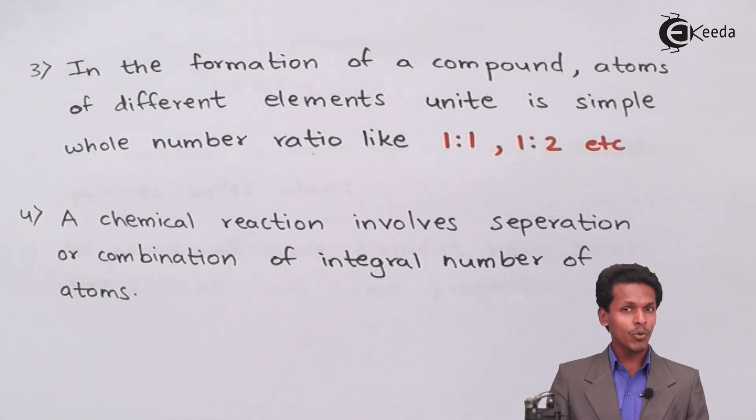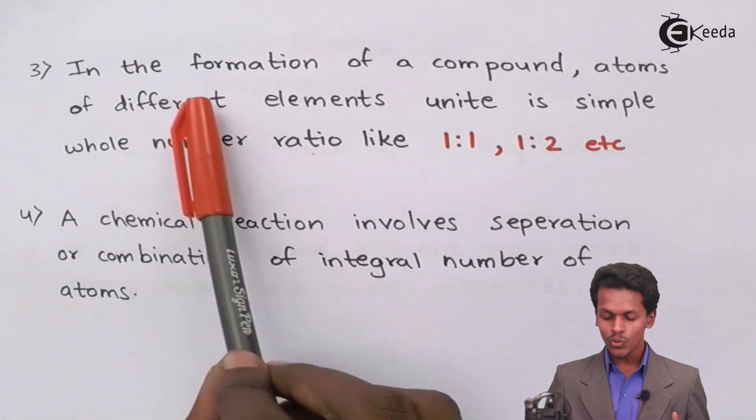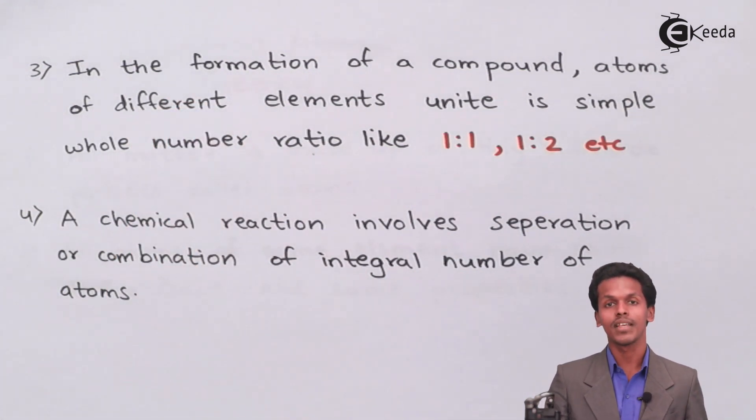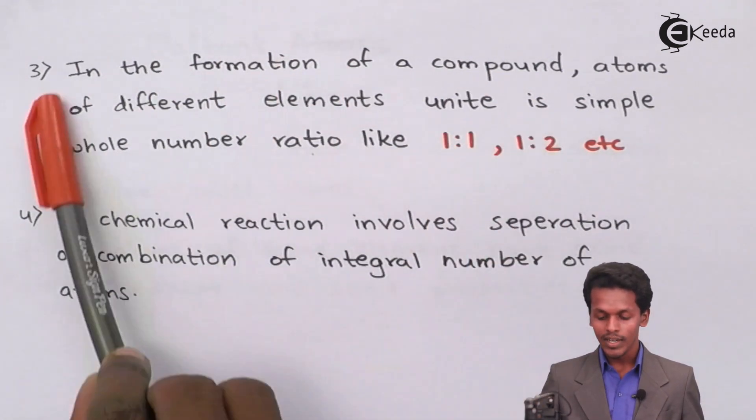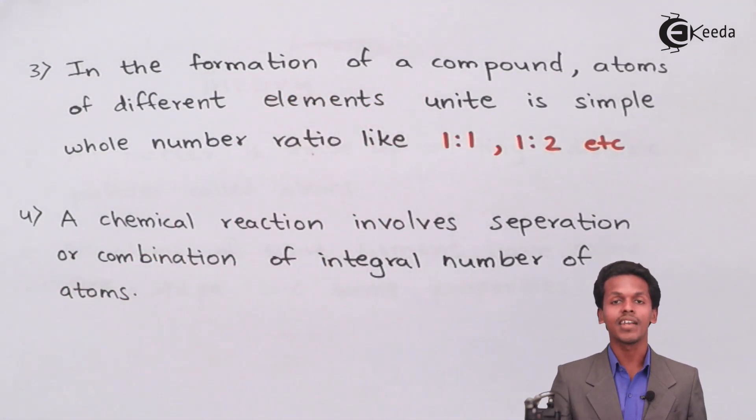The thing I am going to talk about is these two theories of Dalton's atomic theory validate the law of chemical combination that we have done earlier. In that also we have studied that there is maintenance of mass, that is the law of conservation of mass, the law of definite composition, and law of multiple proportion. These rules make it clear that atoms follow the law of chemical combination.